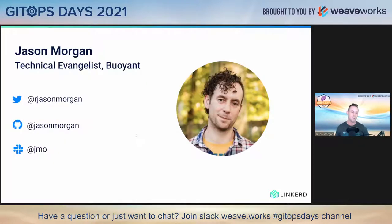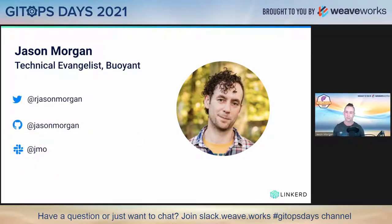So who am I? My name is Jason Morgan. I'm a technical evangelist with Buoyant. You can find me on Twitter, GitHub, or over on the Linkerd Slack. It's my job to talk to folks about Linkerd and try and encourage you to use it.